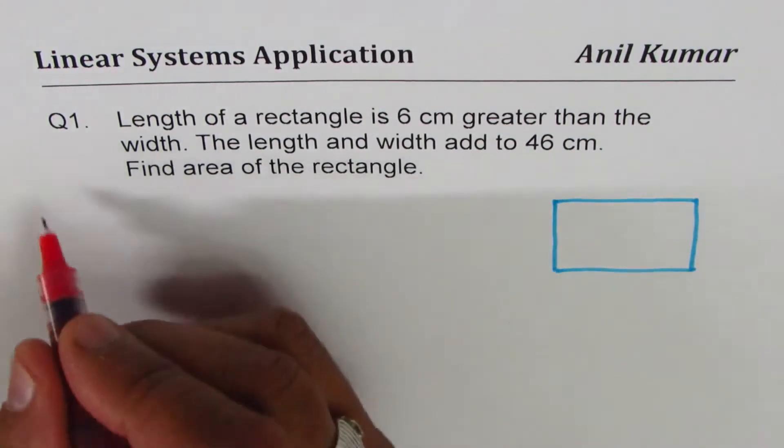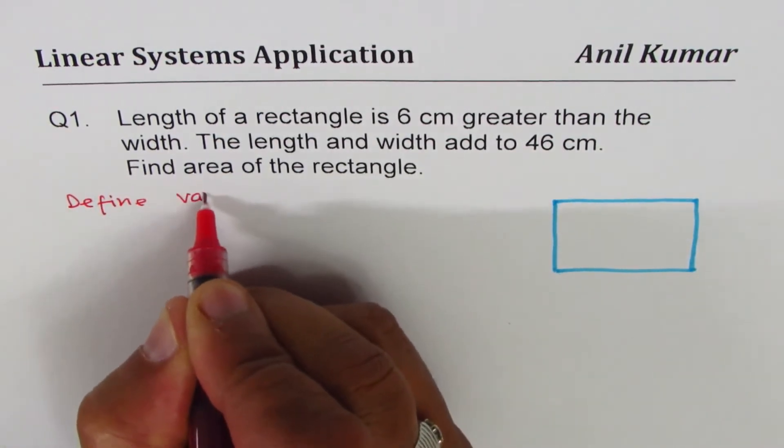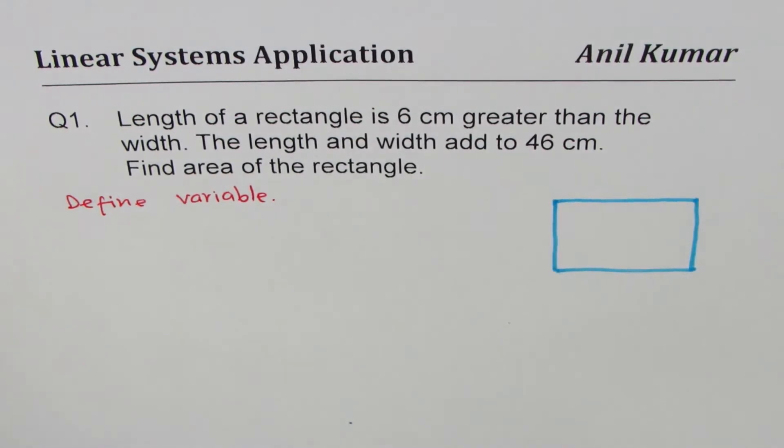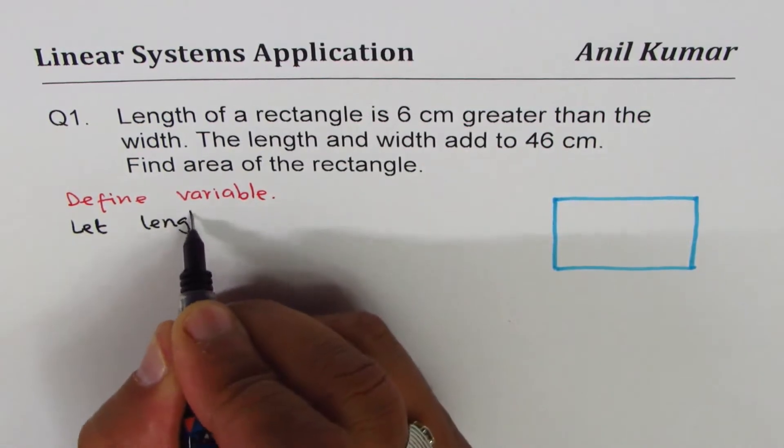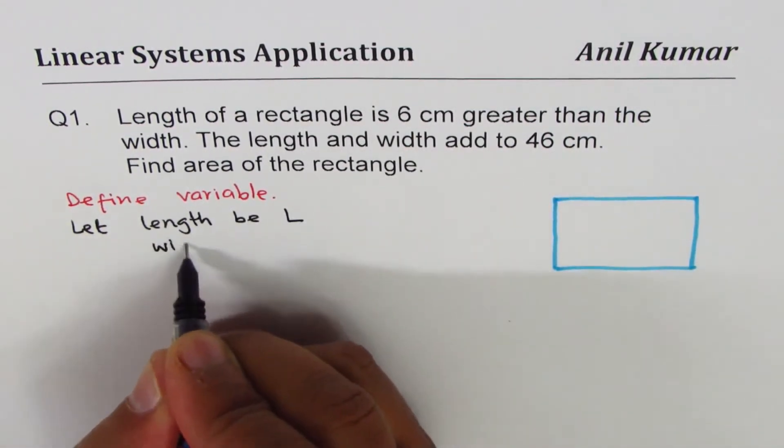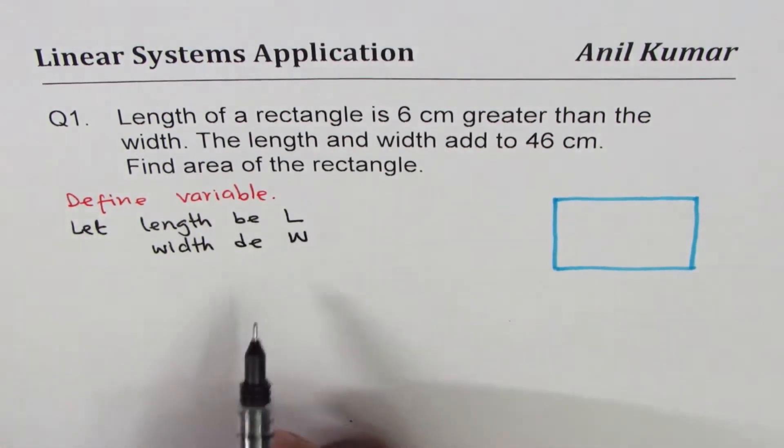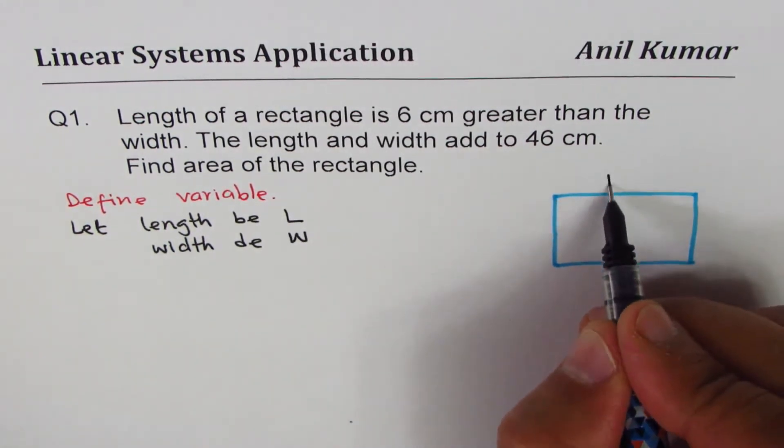Let's define the variable. First step is define variable. That is done by a let statement. We say let length be L and width be W. Once we have variables we can make equations.